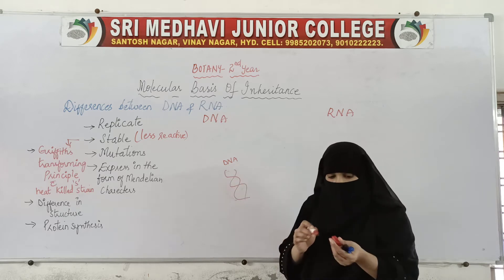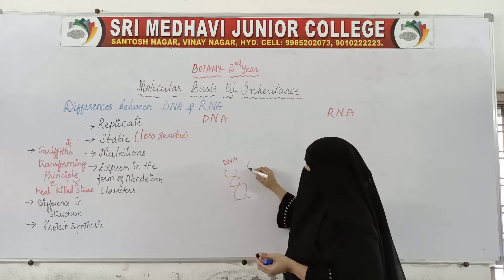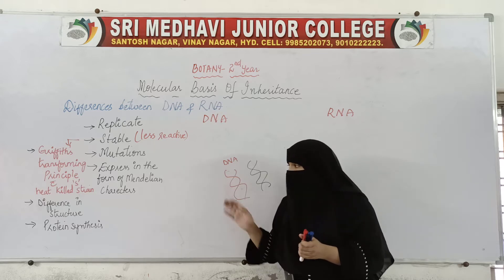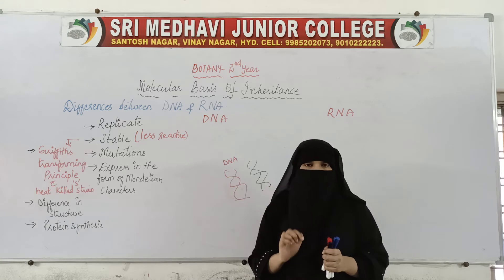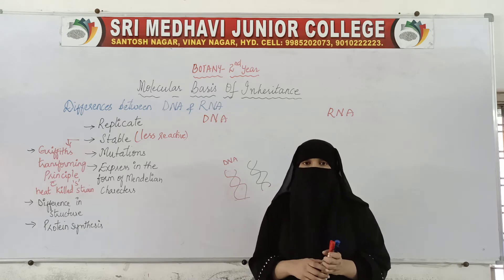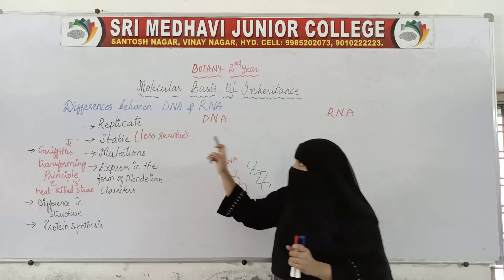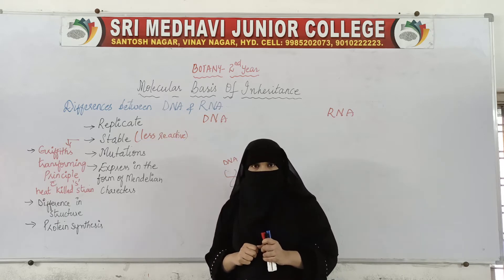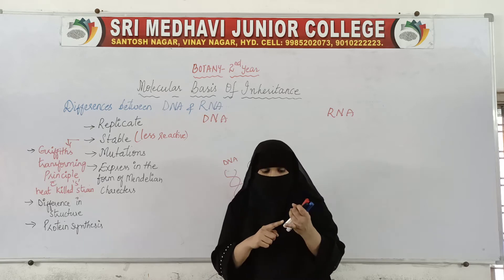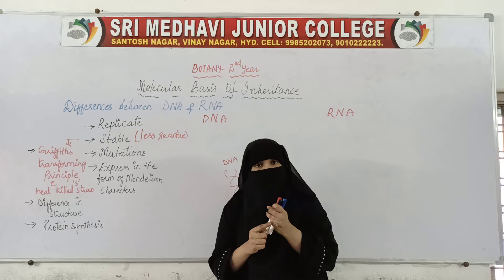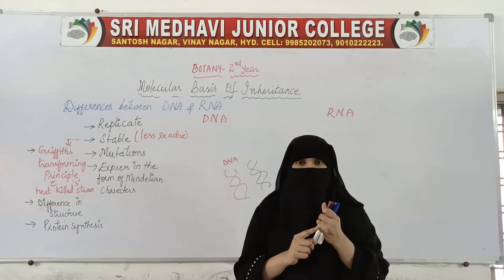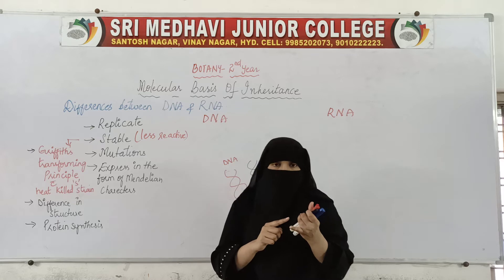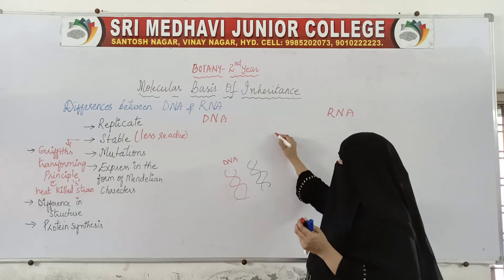If this is one DNA, it should be able to make its exact copy. If it is RNA, it should be able to make its exact copy — that is replication. Both DNA and RNA can replicate themselves because they both follow the base pairing rule — the complementarity base pairing rule. Adenine always pairs with thymine.